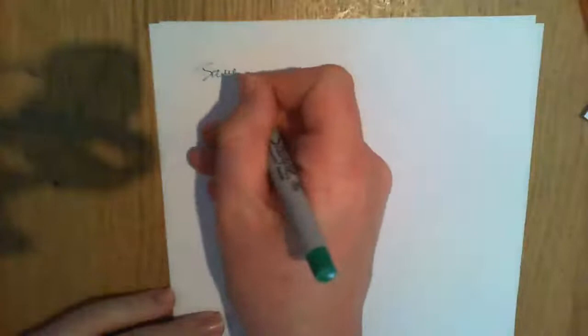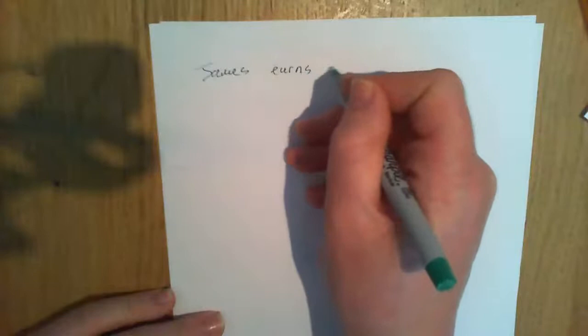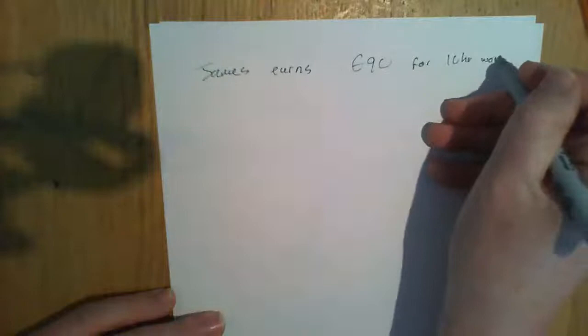Right, hi there. So we're going to have a look at some more direct proportion questions. James earns 90 euro for 10 hours work.